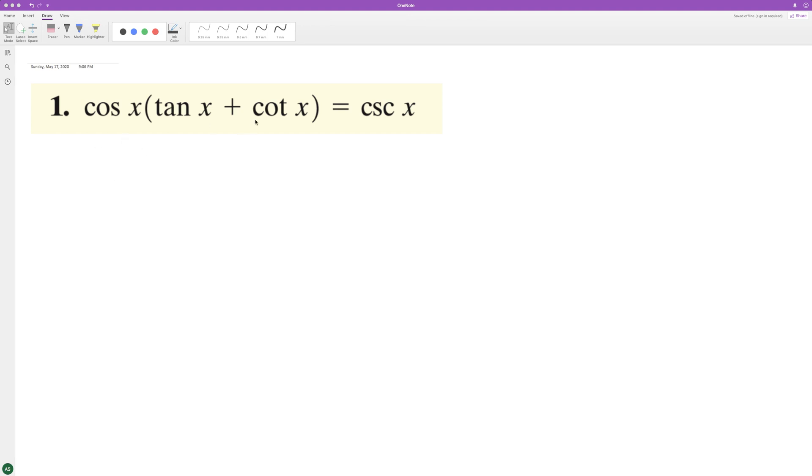Triggered identity. So we'll distribute cosine across. But first, I'll put tangent and cotangent into the simplest terms. So cosine of x, we're multiplying by sine of x over cosine of x, plus cosine of x over sine of x.